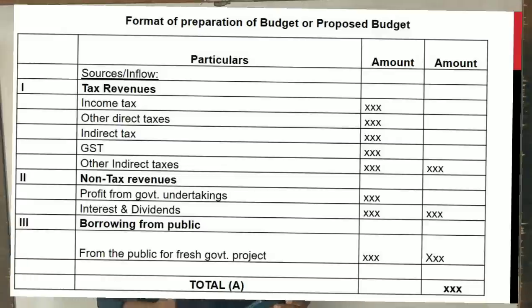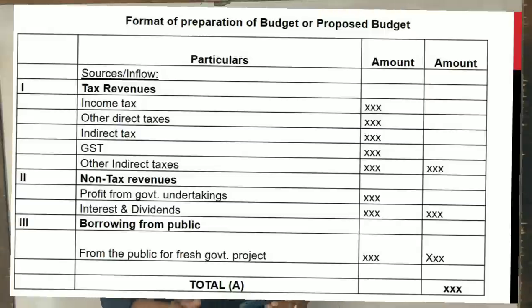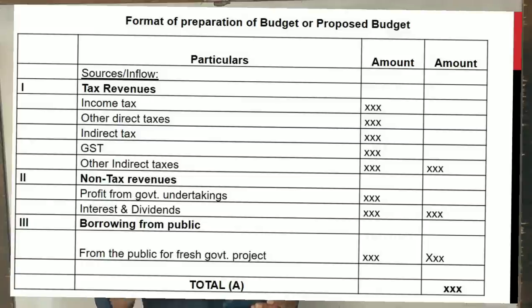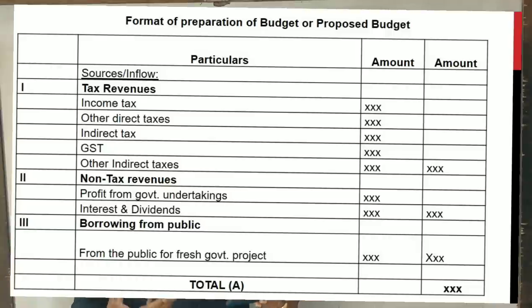Non-tax revenues include: profits from government undertakings — the government operates companies and industries and earns profit as government revenue. Another source is interest and dividends — the government holds foreign bonds, local bonds, and shares in other companies, earning interest and dividends. These form the second source of inflow of cash.